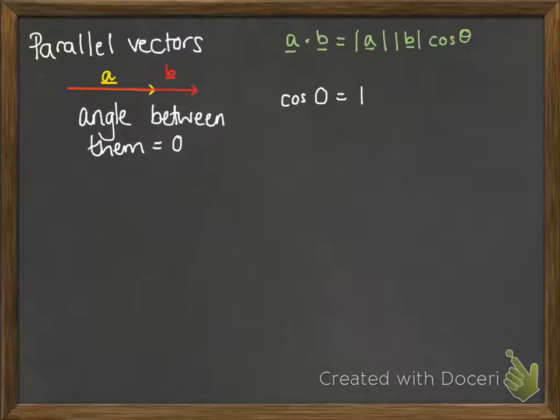If we do cos of 0, we get an answer of 1, which means that our scalar product will just be equal to the modulus of A times the modulus of B, and that cos theta is just 1.